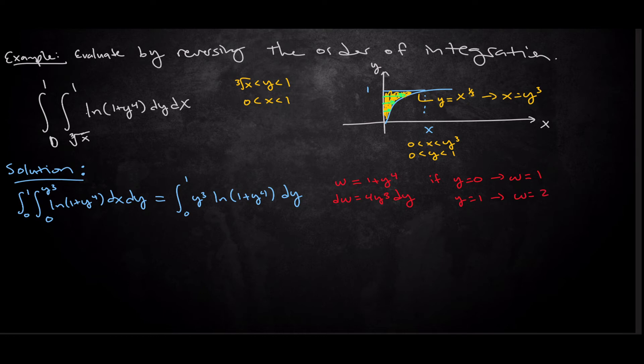So actually a complete substitution turns this integral into the integral from 1 to 2, natural log of w, dw over 4, which is 1 over 4 integral from 1 to 2, natural log of w, dw.